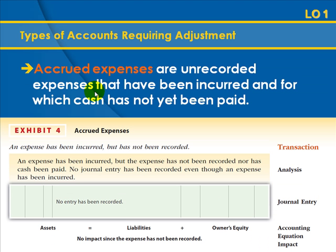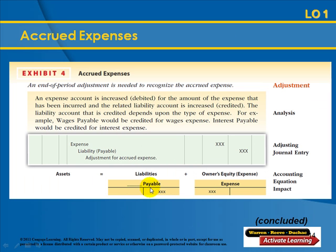Accrued expenses go unrecorded because while the expense is being incurred, no bill has been received. Think of your utility or power bill: while the meter is spinning throughout the month, it's collecting data, then someone reads the meter and the home office generates a bill. The expense goes unrecorded until you actually receive the bill. Once you receive the bill, you record the accrued expense to be paid at a later date by debiting the expense account and crediting the payable account, which is a liability account.